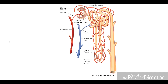The Bowman's capsule leads into the nephron tubule. The renal tubules consist of several parts. The first is the proximal convoluted tubule, or PCT, which arises from the Bowman's capsule. The PCT then opens into the loop of Henle. The main functions of the PCT include absorption of sodium ions, potassium ions, glucose, and amino acids.